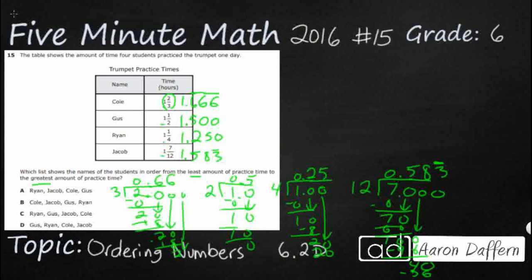What is the other way? Well we can change all of these to the same denominator. We have to find the least common denominator between 3, 2, 4, and 12. Well guess what? All of these numbers can be changed into 12. So this 1 and 7 twelfths is going to work, so I'm just going to write that right there. 1 and 7 twelfths.